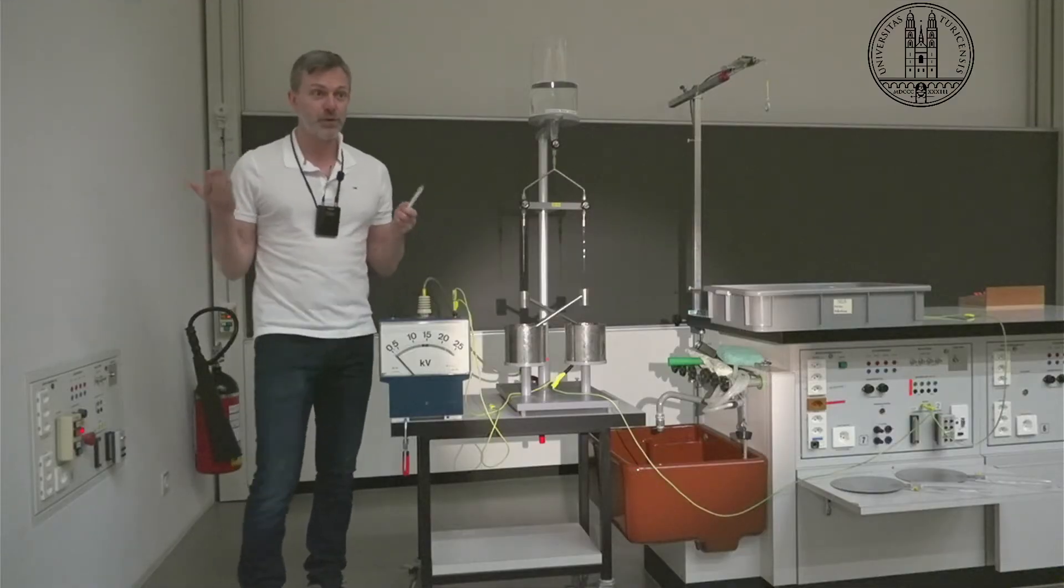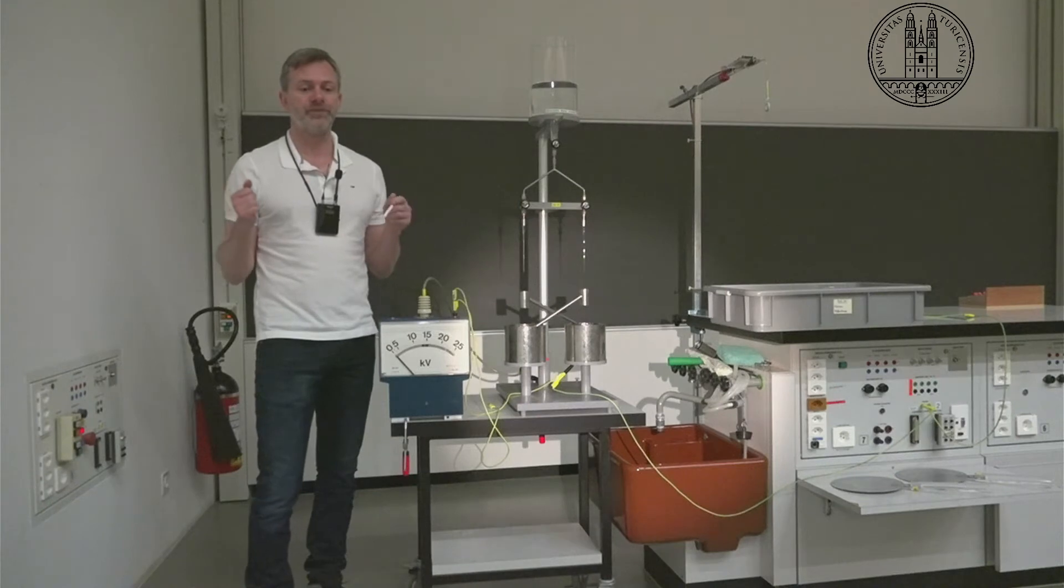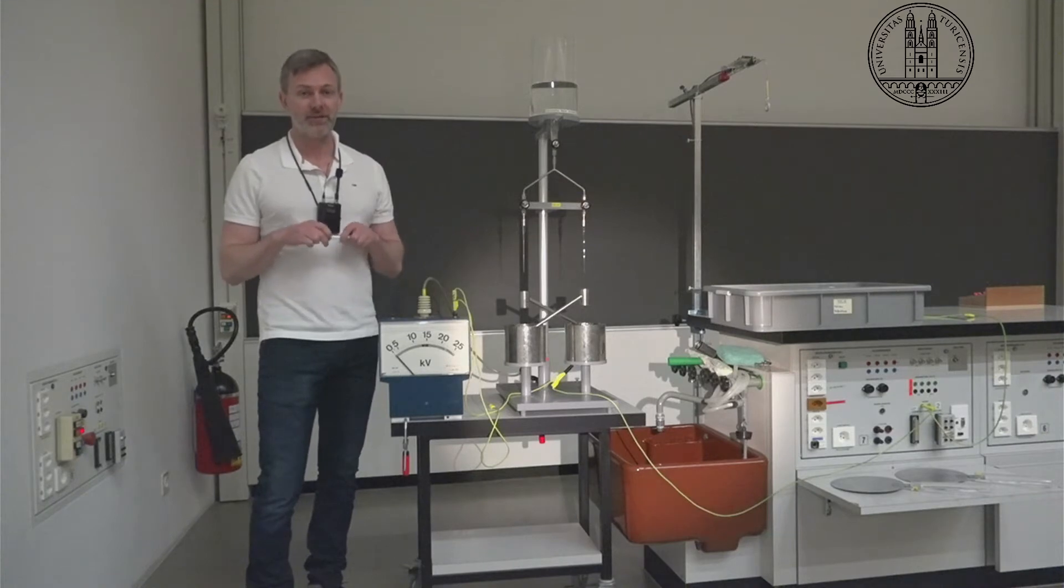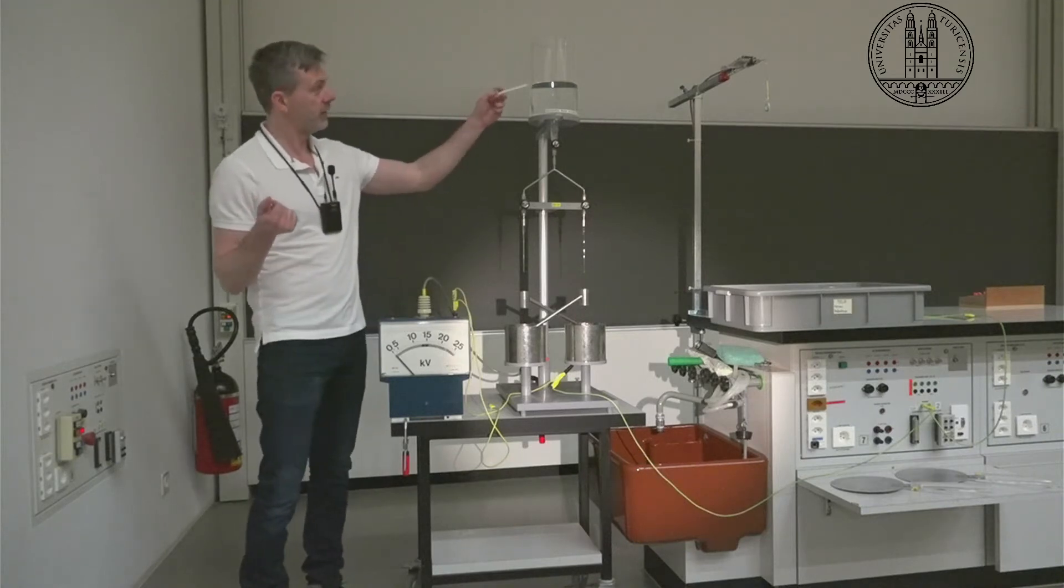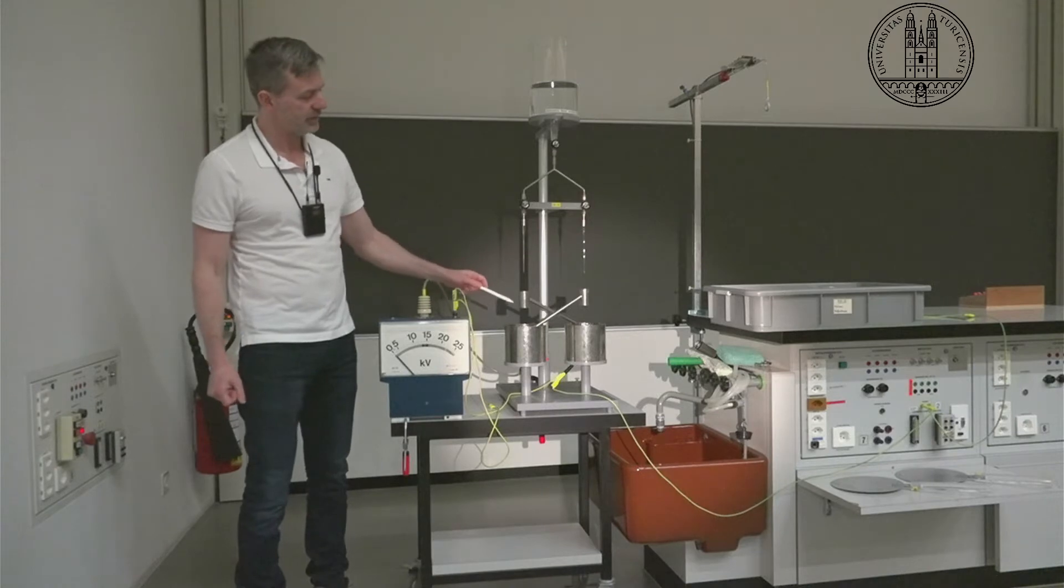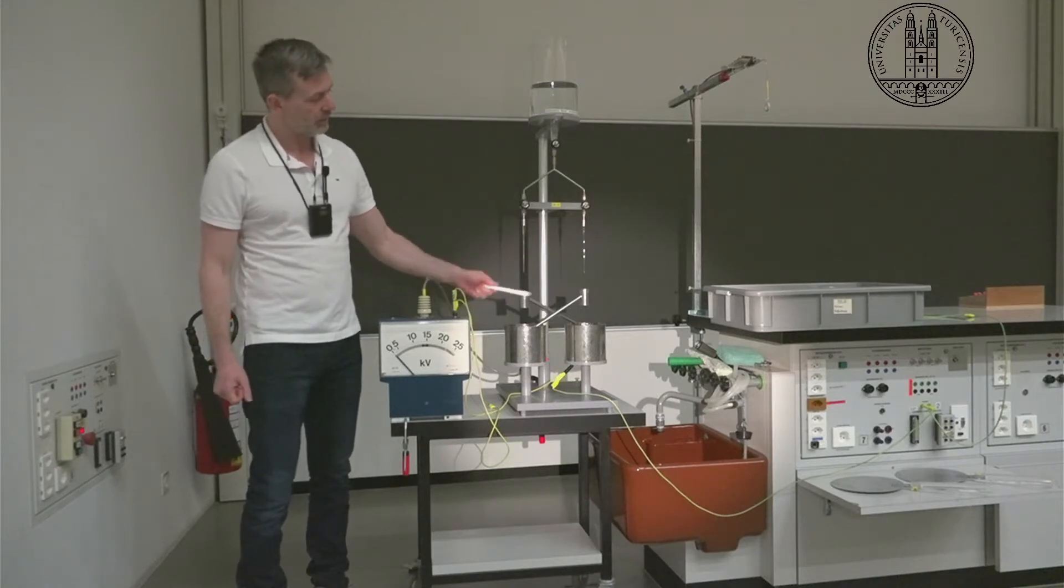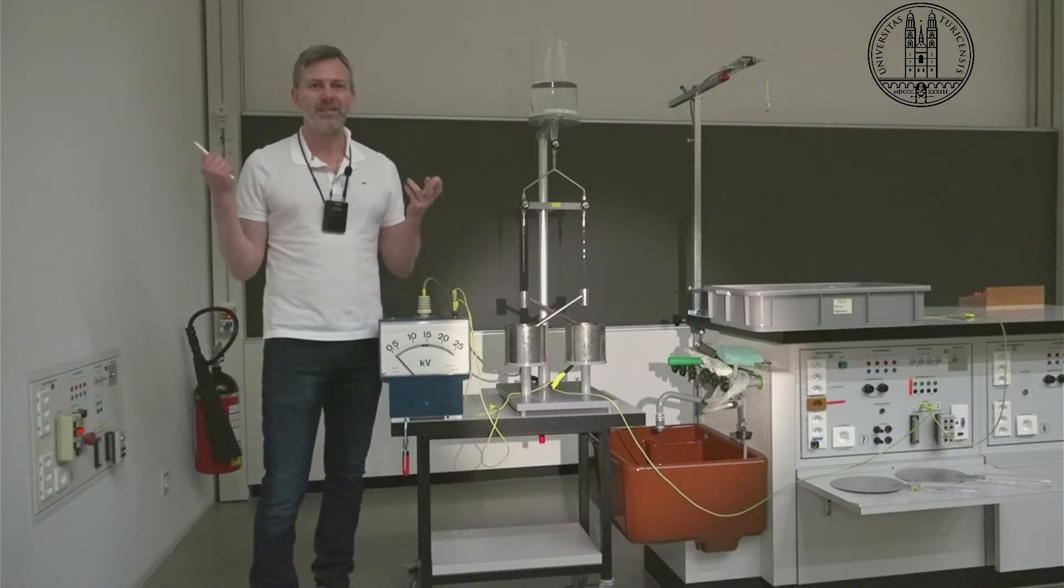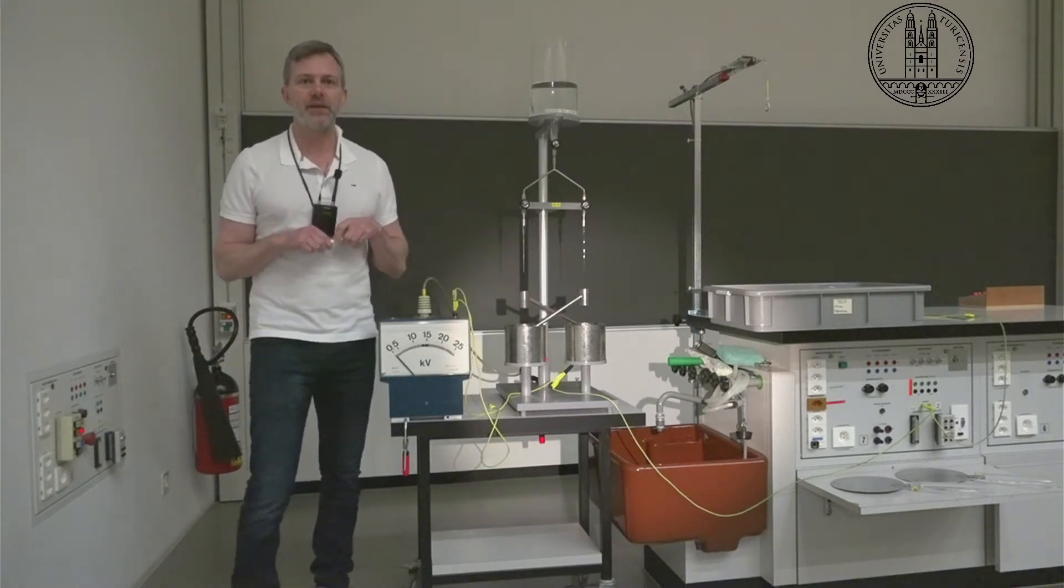So today we're going to do a trick, which is to make a voltage difference out of falling water. And I'm going to say that we can generate 10 kilovolts of voltage just from water falling through this container. So the water will fall down and it will travel through these hollow metal tubes here and land in these pails. So let's have a look at the physics.